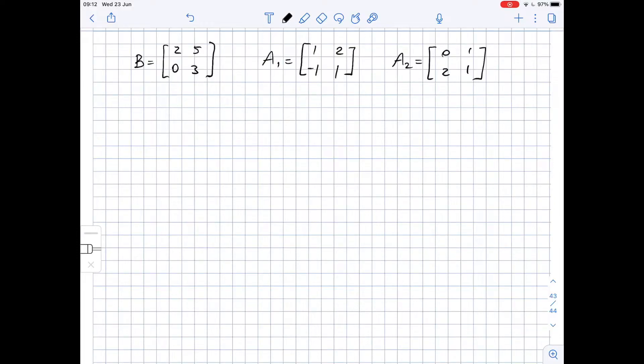We are given three matrices, all of them as two by two matrices, and we need to write matrix B as a linear combination of the other two matrices.